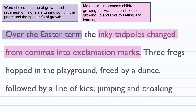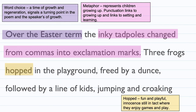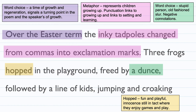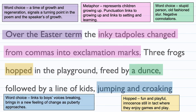'Inky tadpoles change from commas into exclamation marks' is a metaphor — one thing is likened to another without using 'like' or 'as.' The children are the inky tadpoles growing from commas into exclamation marks, representing growing up; the punctuation links to growing up and the setting of learning. 'Hopped' is word choice — it's fun and playful; innocence is still intact. 'Dunce' is word choice for a stupid person, an old-fashioned slur with negative connotations. 'Jumping and croaking' links to the boys' voices breaking as they hit puberty, sounding just like frogs, bringing a new feeling of change as puberty approaches.